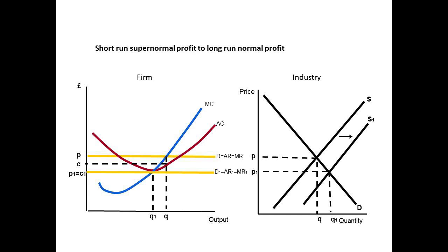any more firms joining will start incurring losses. Therefore, there's no incentive for any more firms to join, meaning this point here where normal profit is being made is the long-run equilibrium.